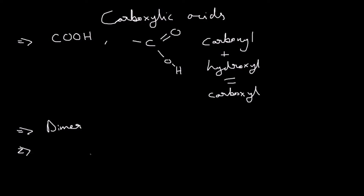The first member of the carboxylic acid series is called methanoic acid. It is found in nettles — that's what makes nettles sting. Then you also have ethanoic acid, which is of course used in vinegar.